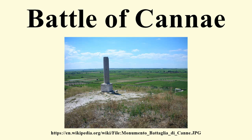In the spring of 216 BC, Hannibal took the initiative and seized the large supply depot at Cannae, in the Apulian plain, placing himself between the Romans and the crucial source of supply. As Polybius noted: the capture of Cannae caused great commotion in the Roman army, for it was not only the loss of the place and the stores in it that distressed them, but the fact that it commanded the surrounding district. The consuls, resolving to confront Hannibal, marched southward in search of him. After two days' march, they found him on the left bank of the Aufidus River, and encamped six miles away.